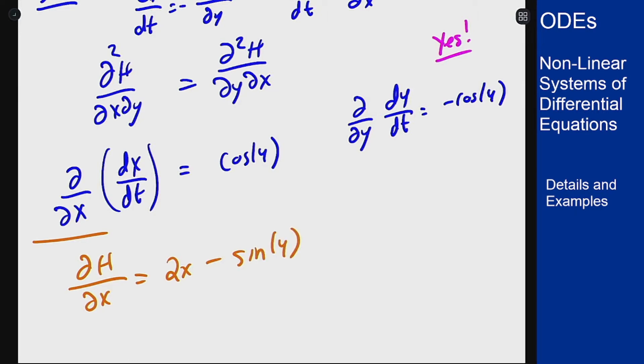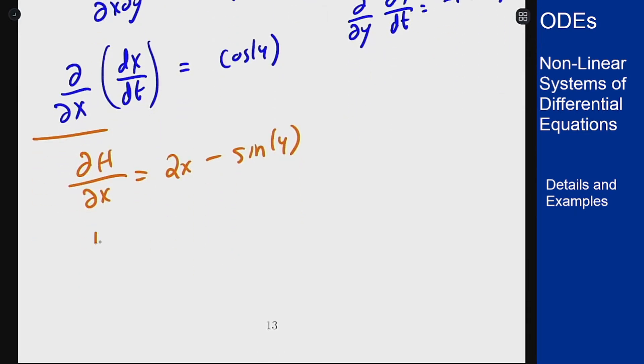I can integrate both sides in x here to get that h should be x squared minus x sine of y, but then I have plus my constant, plus c, but in this case this is any function of y because my derivative here was a derivative in x. I differentiate this in x for any function a of y, I get back to this function here.